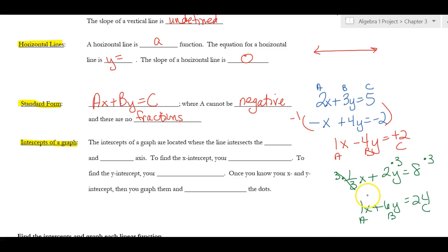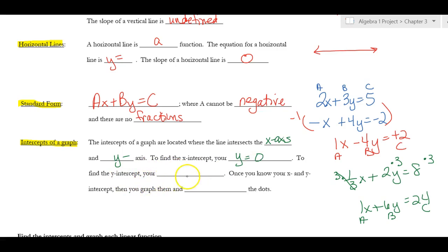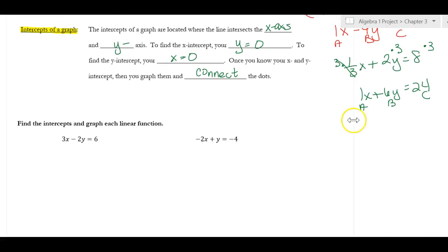Now let's talk about intercepts. Intercepts are where the line crosses the x-axis and the y-axis. To find the x-intercept, the line doesn't go up and down there, so y equals zero. To find the y-intercept, the graph doesn't go left or right there, so x equals zero. Once you know both intercepts, you graph them and connect the dots.